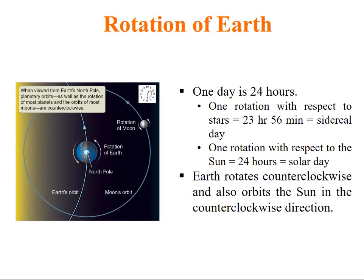One day is 24 hours. One rotation with respect to the stars is 23 hours and 56 minutes. One rotation with respect to the sun, that is what we call solar day, that is 24 hours. 23 hours and 56 minutes is the time taken for one rotation with respect to a distant star like Polaris. Earth rotates counterclockwise and also orbits the sun in the counterclockwise direction. It is happening counterclockwise, which you have to remember.